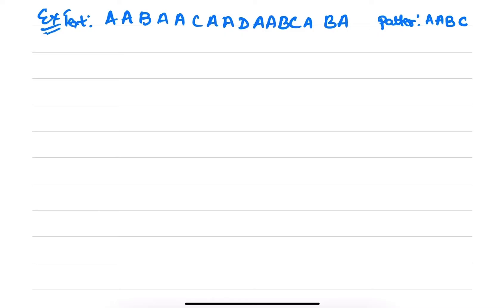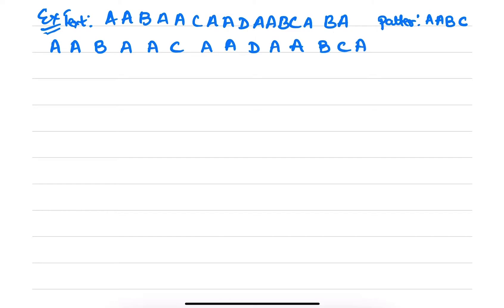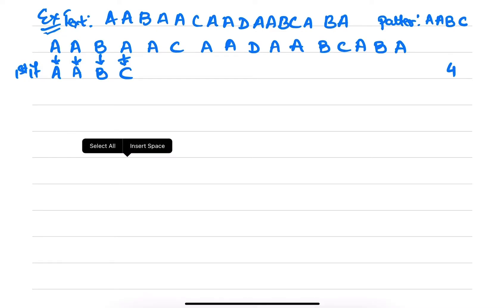So the first iteration — I'll compare the pattern AABC against the text. This matches, this matches, this matches, but this doesn't match. So how many comparisons made? 4 comparisons.